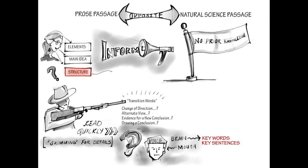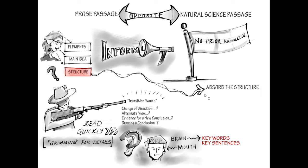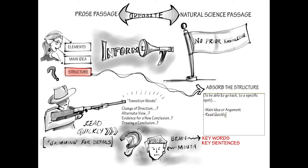So to recap: when reading the natural science passage, you do not need to understand the passage completely, but you do need to understand the main idea or the argument. You are reading at a quicker pace that will allow you to skim the passage by hearing with your brain voice only the important words or topic sentences, and the rest of the time you are mumbling through the details.